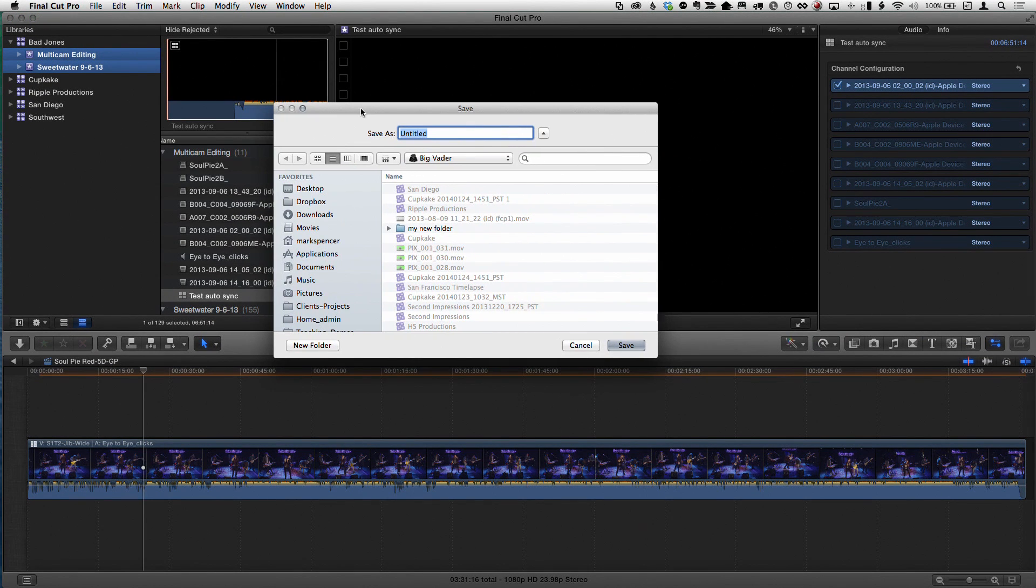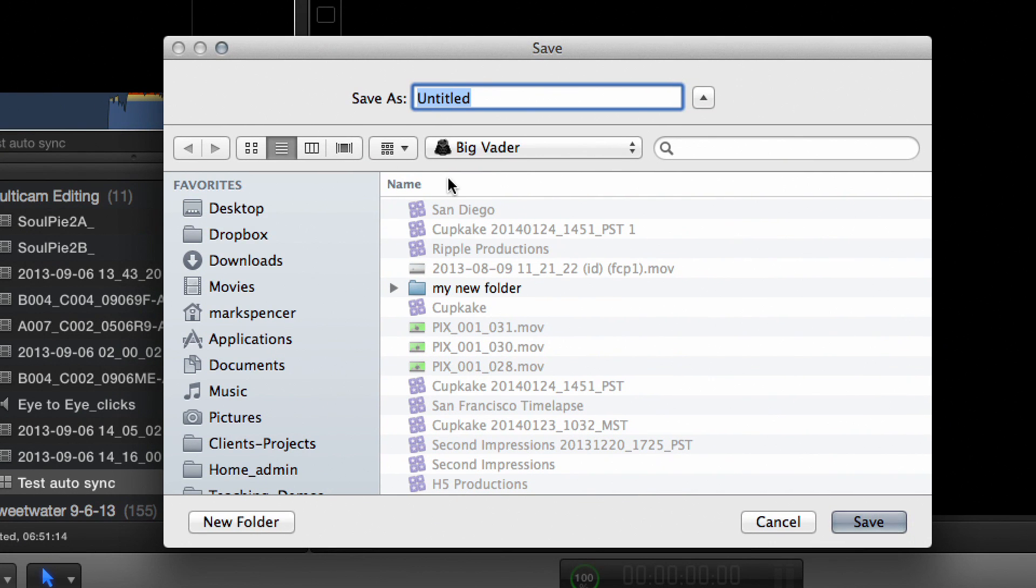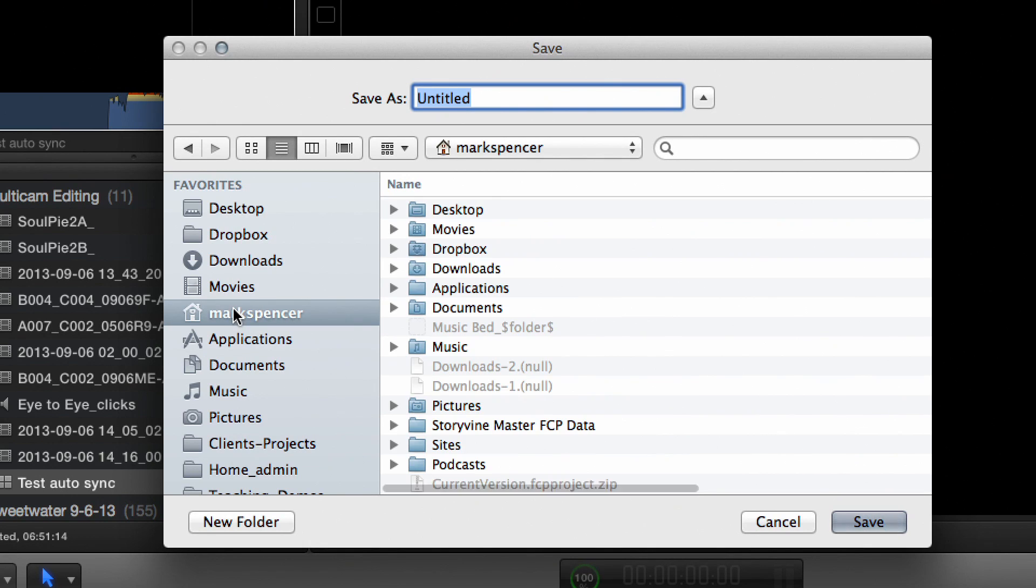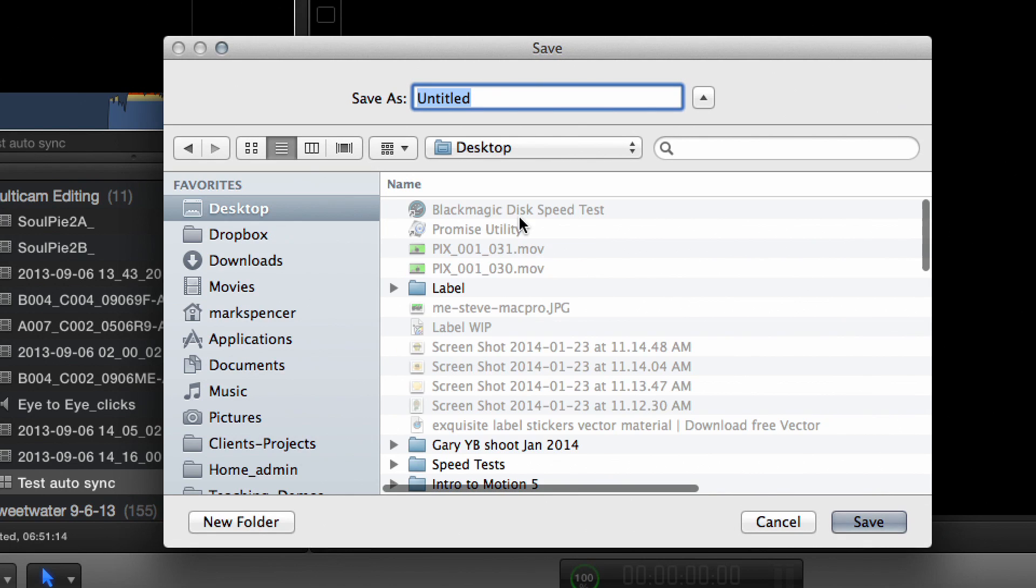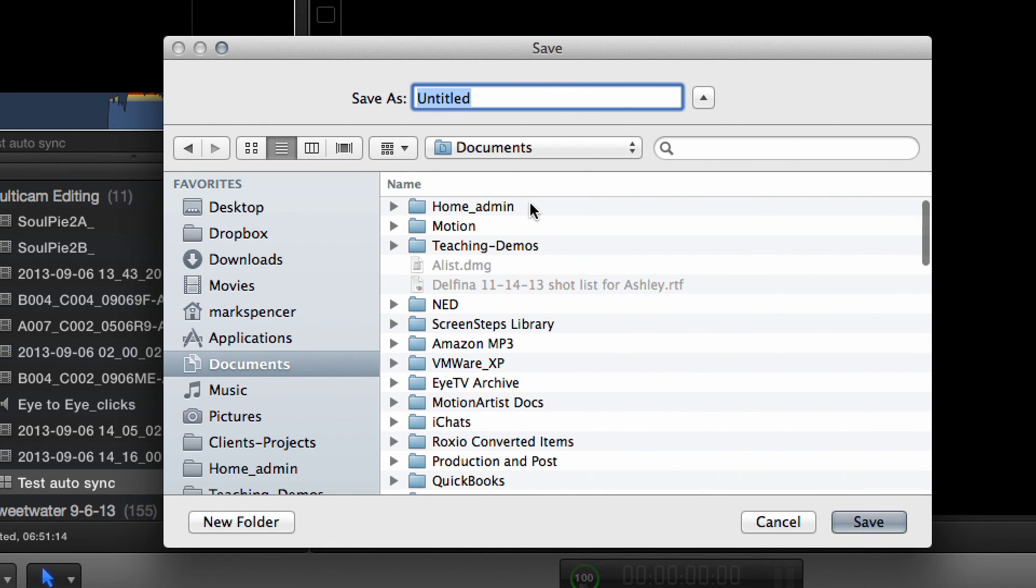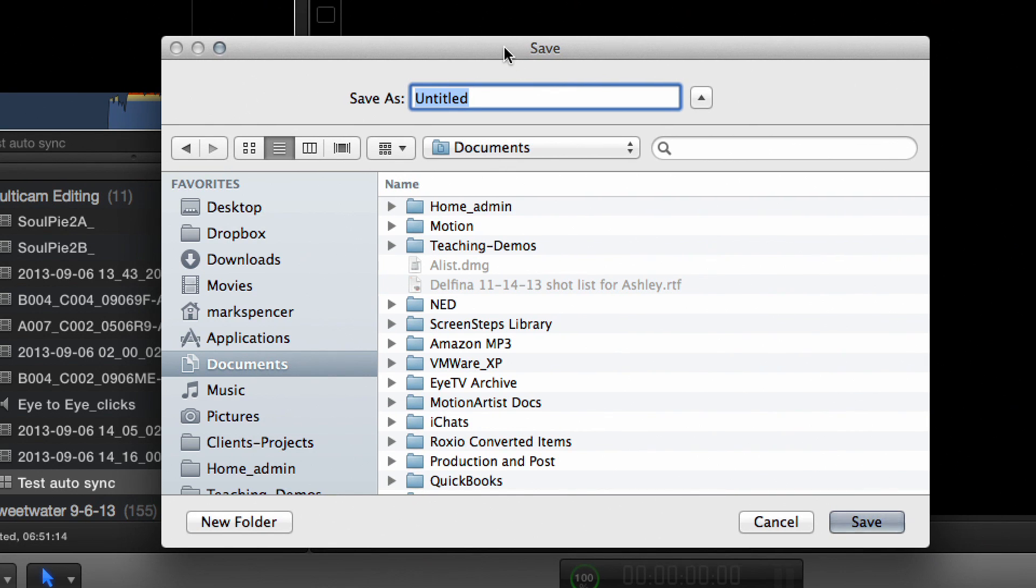And then what I do here is target the drive that I want to put them on. So right now, everything's on this big Vader drive, so let's say I wanted to put it somewhere else. I don't want to go to my desktop because it's such a mess. But whatever, I'll go to my documents folder. So I can go to my documents folder. Really, I would do it to some other connected drive.